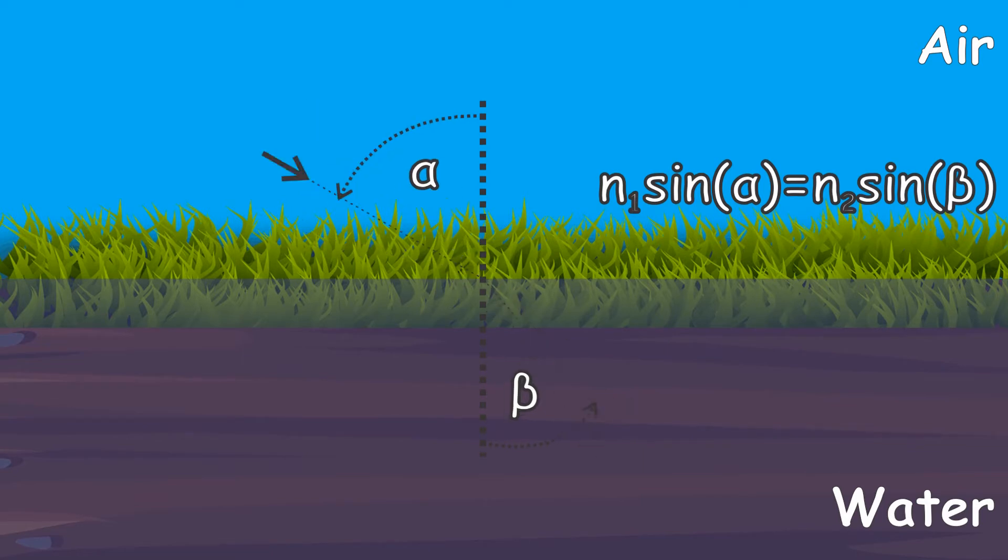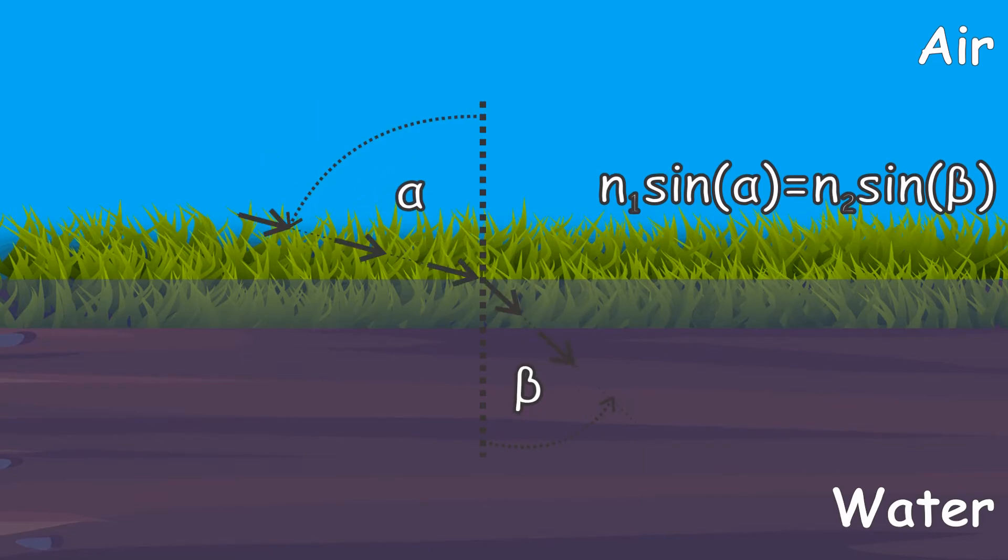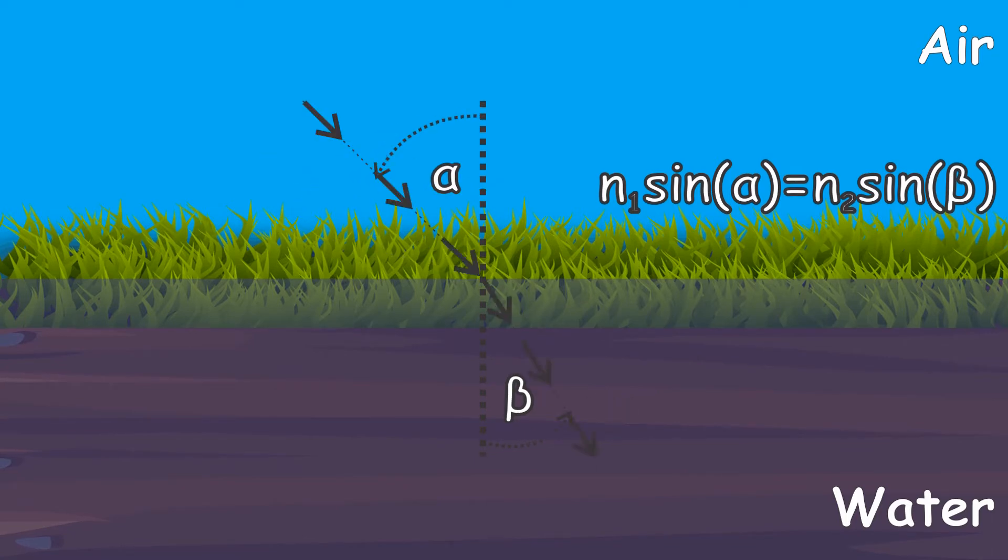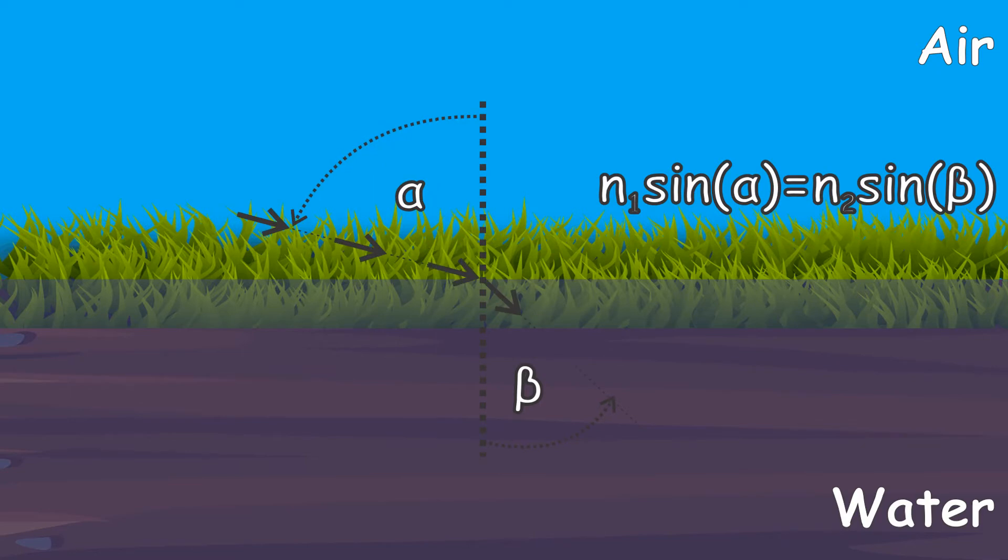The speed of light in water is three quarters of the speed of light in vacuum while the speed of light in air is almost equal to the speed of light in vacuum.